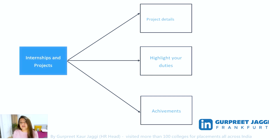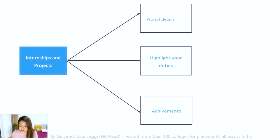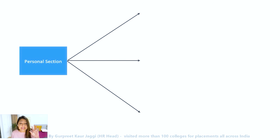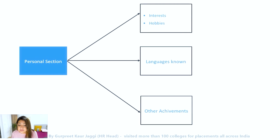Everyone should have some internships or college projects to capture. Make the information sound very technical and concentrate on the work you did in the project. The two most important sections of your entire CV are your skills and your internships and projects. Both of these sections should be highly technical — they should speak to the specific role you are applying for.